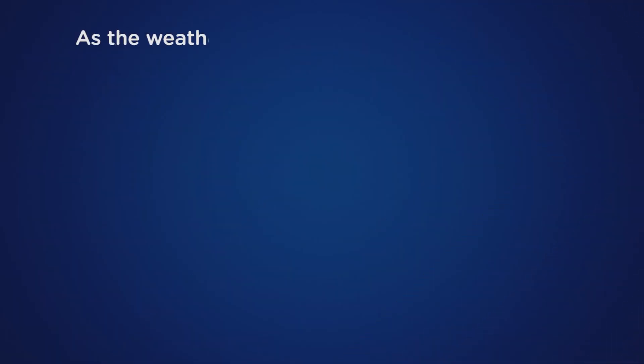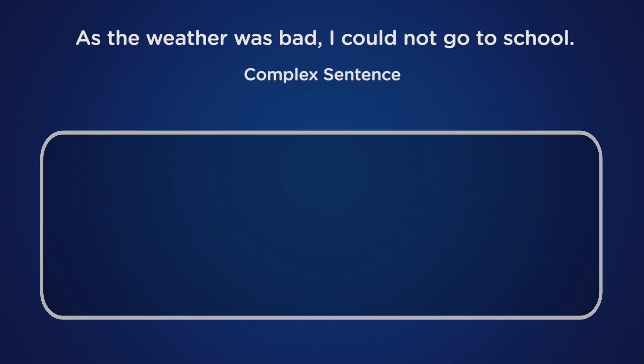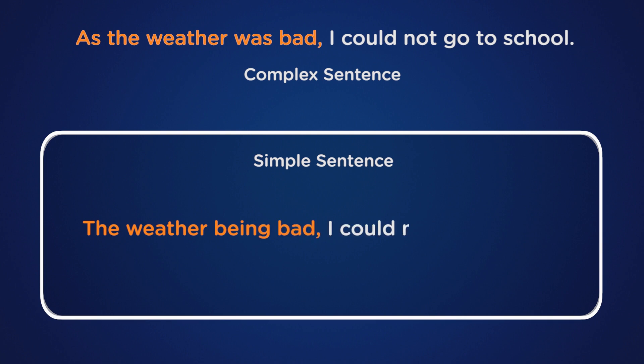For example, "As the weather was bad, I could not go to school." This is a complex sentence. So, if you want to convert it to a simple sentence, you can contract any subordinate clause into words or phrases. So you can say: "Due to bad weather, I could not go to school."